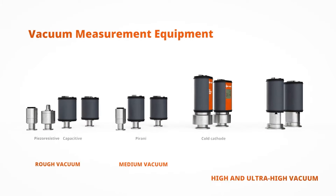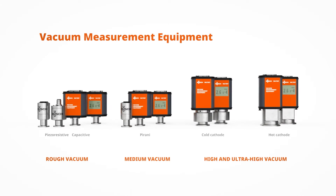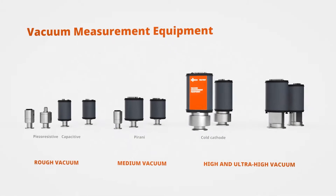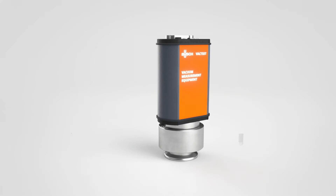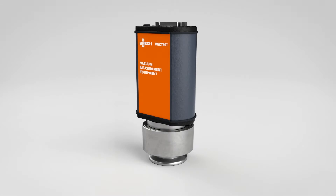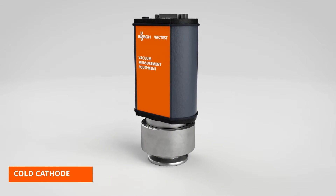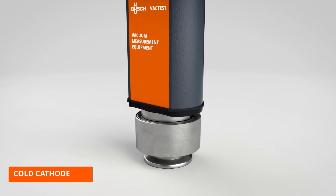Accurate pressure measurement is key in vacuum assisted production. Only the correct pressure can ensure the efficiency of the process and a high quality end product. In this video we will show you how vacuum is measured using the cold cathode measurement principle.